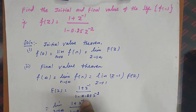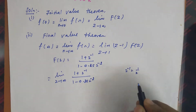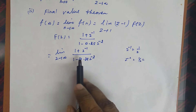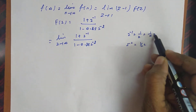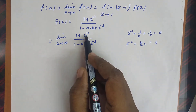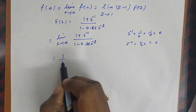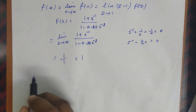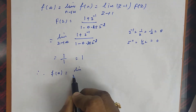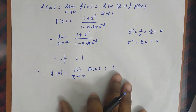Note that z⁻¹ means 1/z and z⁻² means 1/z². When we allow z to tend to infinity, 1/z and 1/z² both become zero — anything divided by infinity is zero. So z⁻¹ becomes 0 and 0.25z⁻² also becomes 0, leaving us with 1/1, which equals 1. Therefore f(0), our initial value, equals 1.